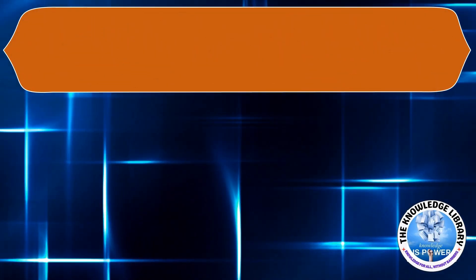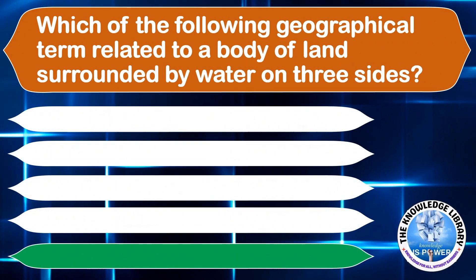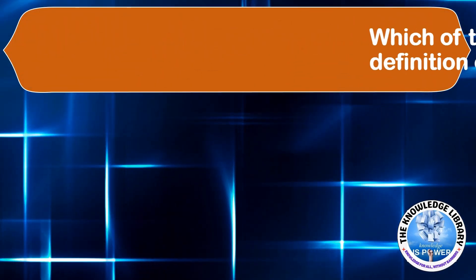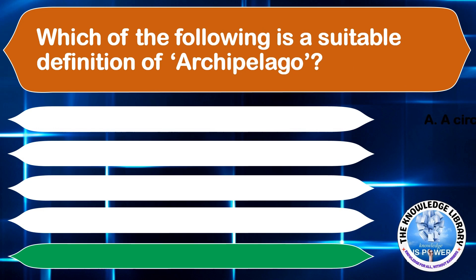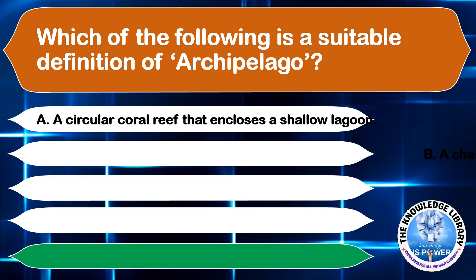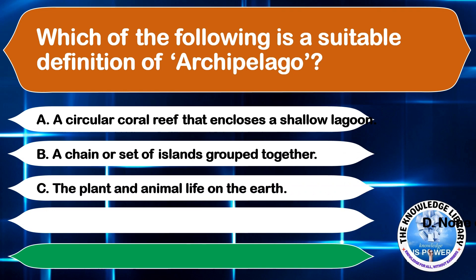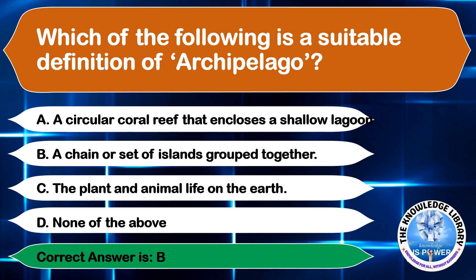Which of the following is a suitable definition of archipelago? A. A circular coral reef that encloses a shallow lagoon, B. A chain or set of islands grouped together, C. The plant and animal life on Earth, or D. None of the above. The correct answer is option B, a chain or set of islands grouped together.